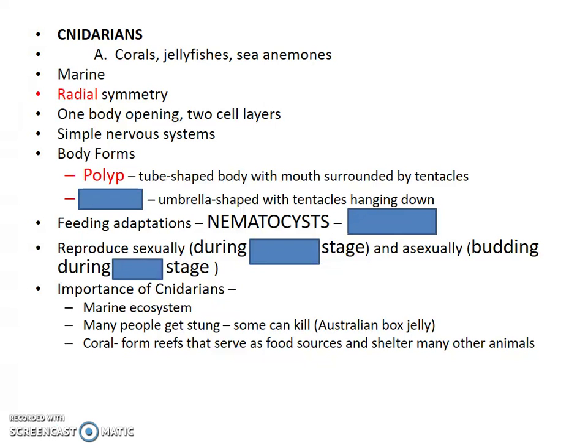There are two body forms. You have the polyp — which is what you can see when you think of like a coral. It is that tube-shaped circular body with tentacles coming out. Then you have the medusa stage, which is the one we're most familiar with when we think of a jellyfish. All cnidarians have both a polyp and a medusa stage. For jellyfish, the medusa stage is the adult stage — it releases sperm and egg, which fuse into the larva. The larva attaches to a hard surface, develops into the polyp stage, and then little medusa stages bud off from there.